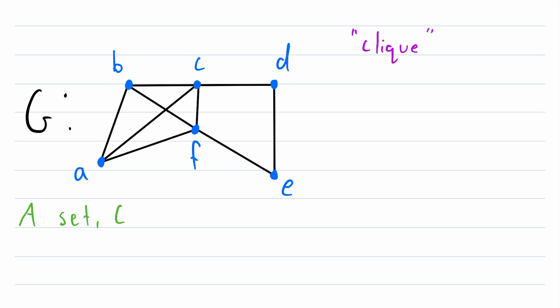A set C is a clique of the graph G if and only if, which we can abbreviate as iff with two Fs, if and only if C is a subset of the vertex set of G, and every pair of distinct vertices in C is adjacent in G. And we can write that like this.